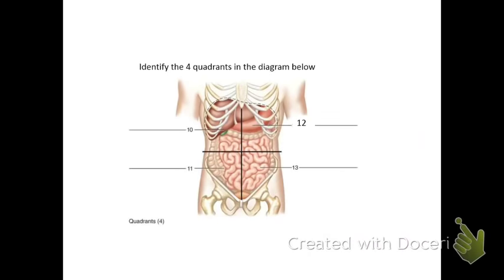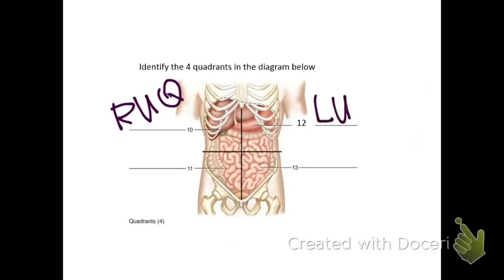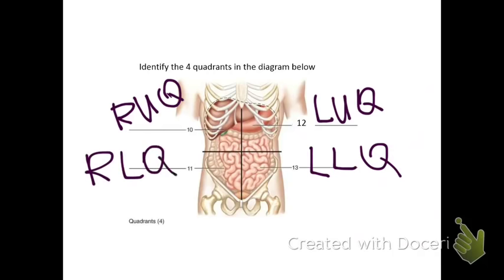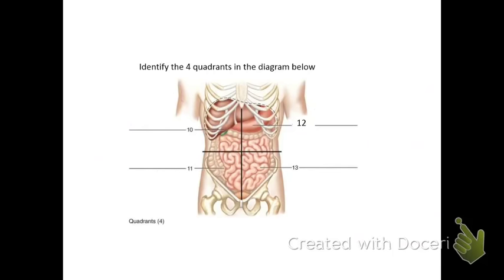This one I wanted to go over in the video. We're using the words from the handout, not the ones in the picture — though if you wrote what was in the picture, I would not mark it wrong. You have to write the words out: right upper quadrant, left upper quadrant, left lower quadrant, and number 11 would be right lower quadrant. Let's go over the nine-region model.